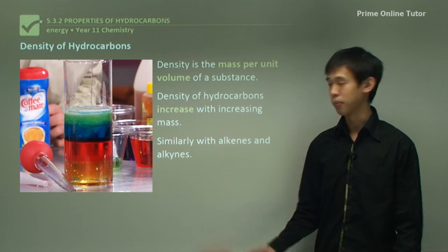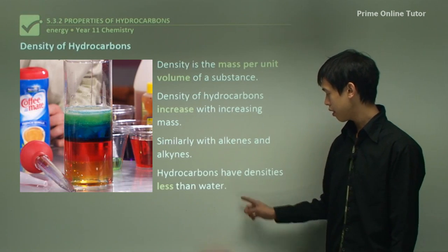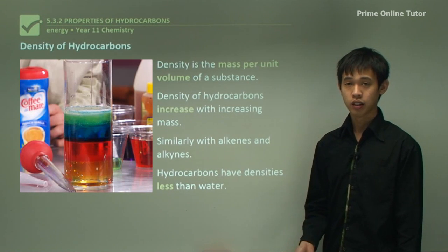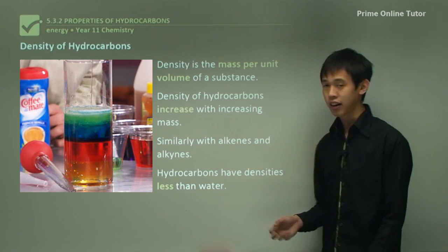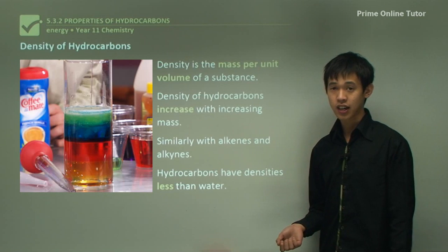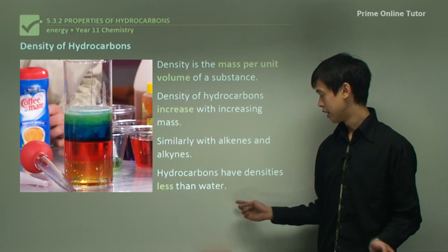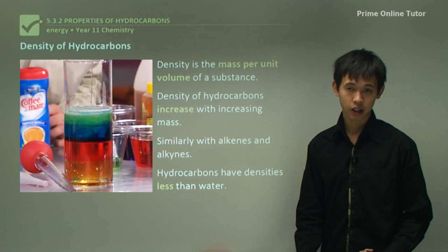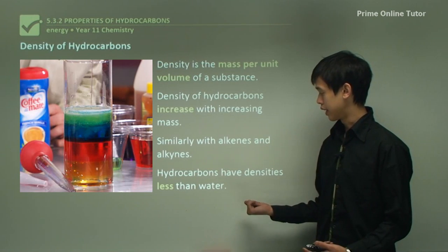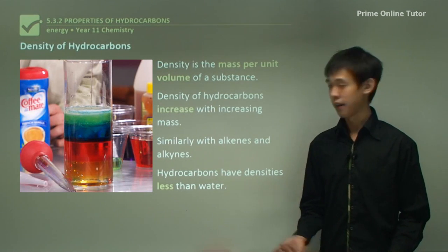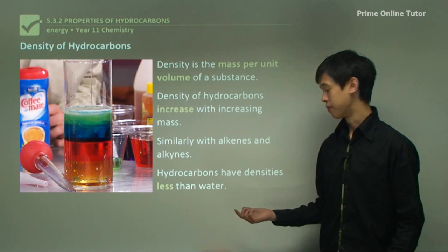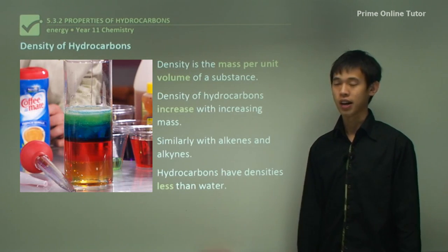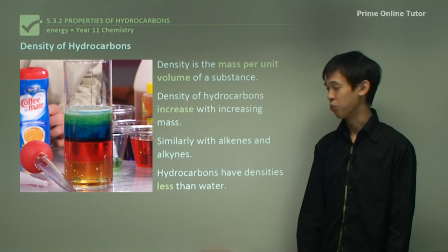Hydrocarbons generally have densities less than water. For alkanes, alkenes and alkynes, all of them will have densities less than water. But for other more complicated hydrocarbons, some will have densities greater than water. For now, we'll just say most of them will have densities less than water.